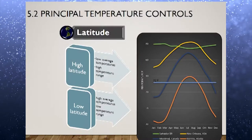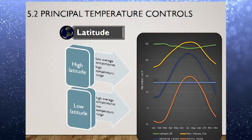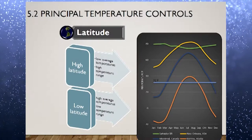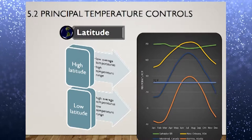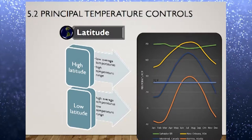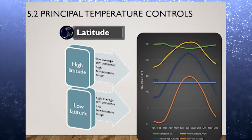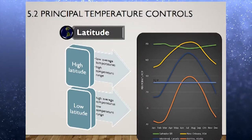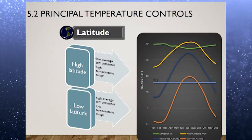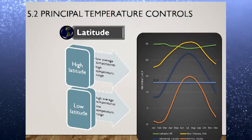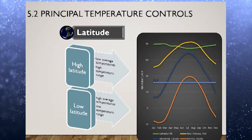Latitude refers to the distance of a location on the Earth's surface from the equator, while altitude describes how high a place is located above sea level. Latitude and altitude are two primary factors known to affect temperature on the Earth's surface because of unequal heating of temperature.